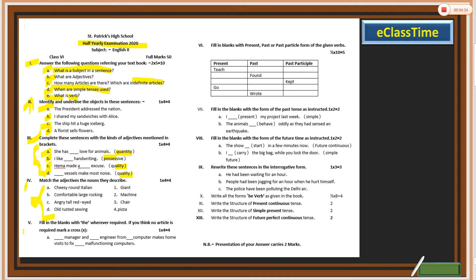Number five: fill in the blank with the article wherever required. If no article is needed, put a cross sign. Wherever 'the' is needed, put 'the'; if not needed, put a cross sign. You have to write the sentence completely. Number six: fill in the blank with the present, past, and past participle forms.